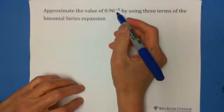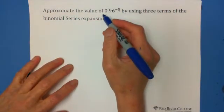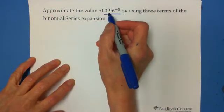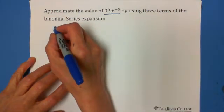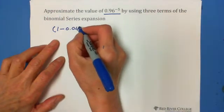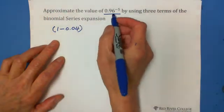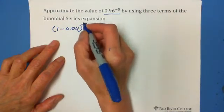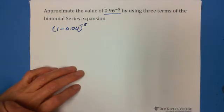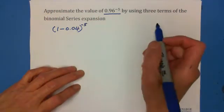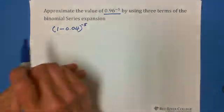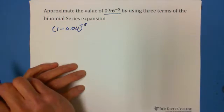So 0.96 to the negative 5, to write this one into a binomial, we can write because 0.96 is 1 minus 0.04. 0.96 to the negative 5 exponent, right? We follow the formula, we follow the pattern of binomial theorem expansion. And using the three terms, the first three terms, we can get approximate the value. So let's do it.